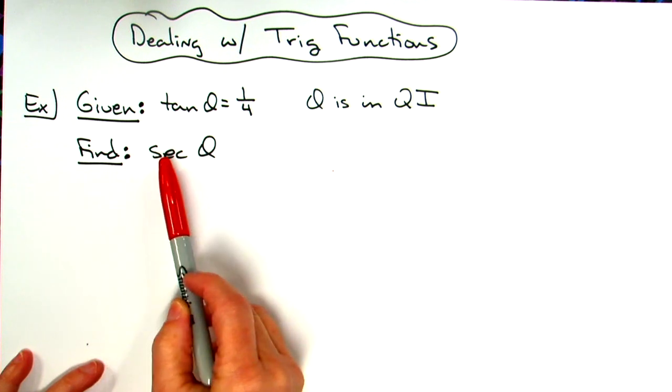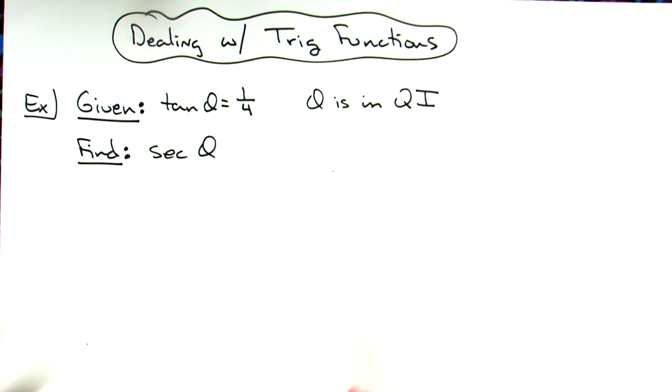We want to find secant theta. Now there's a variety of ways we could do this. You could use Pythagorean identities, but you could also just use some right triangle trig.